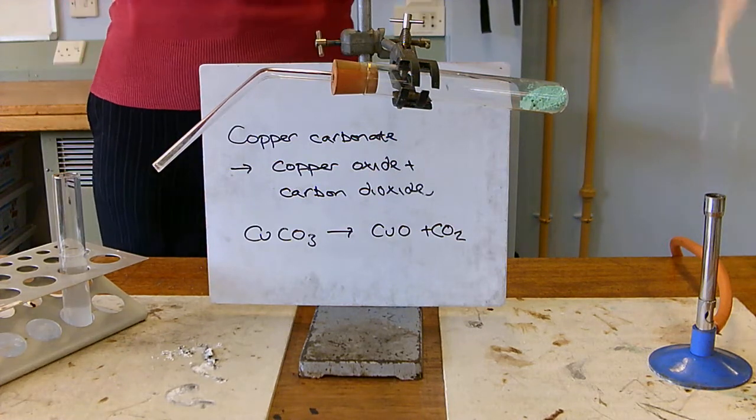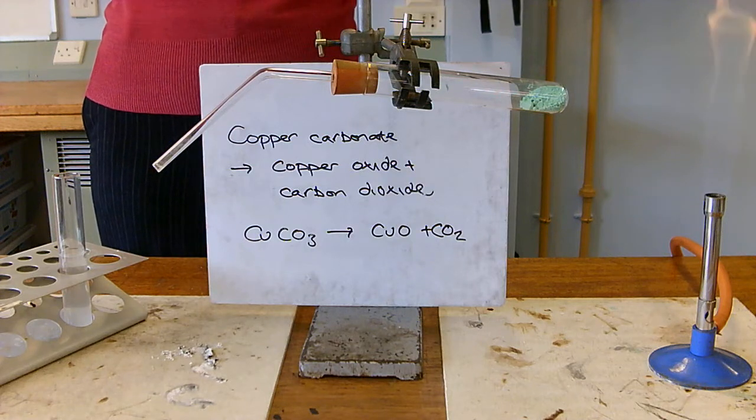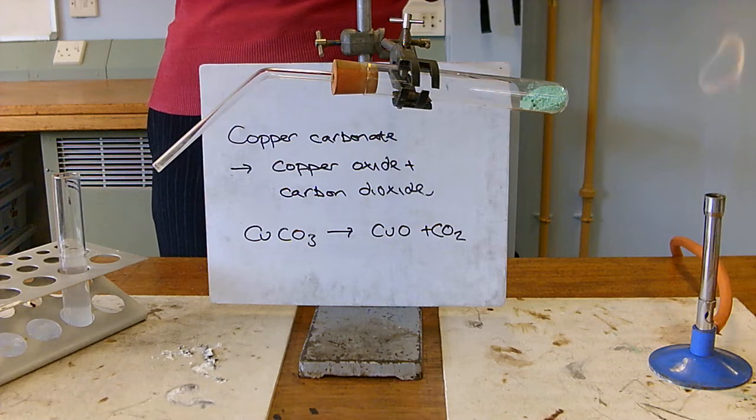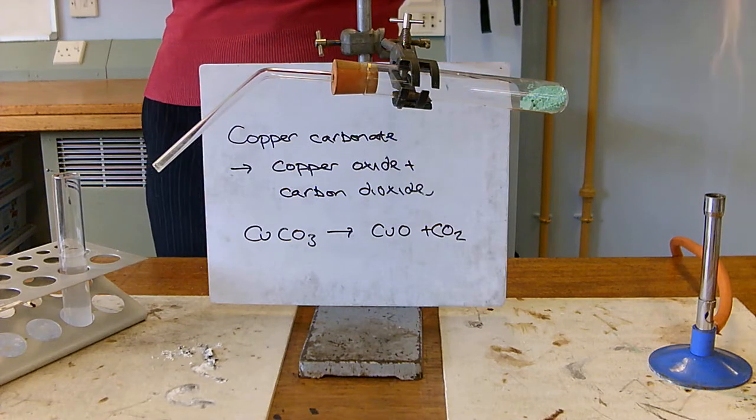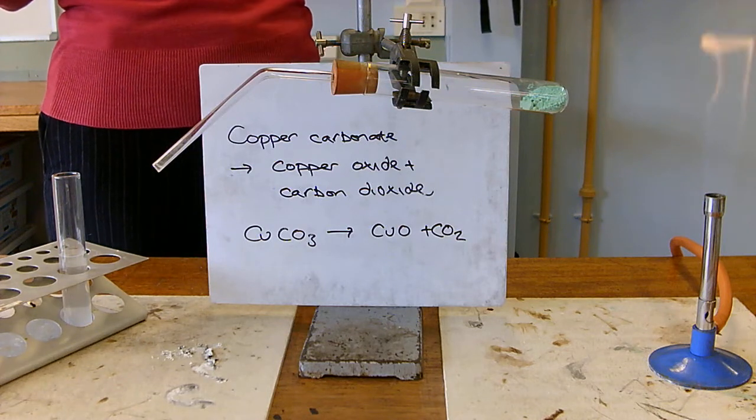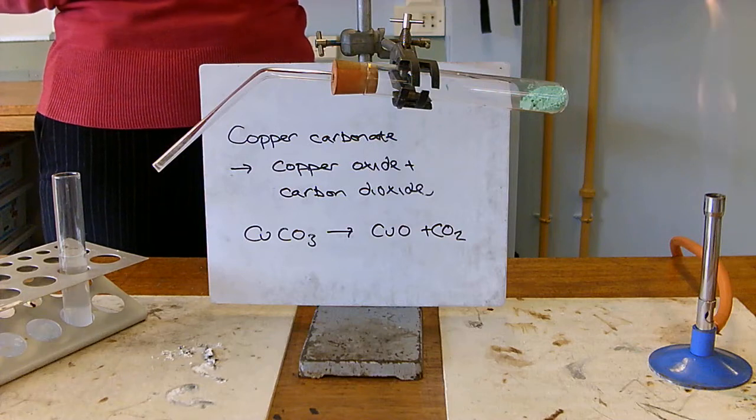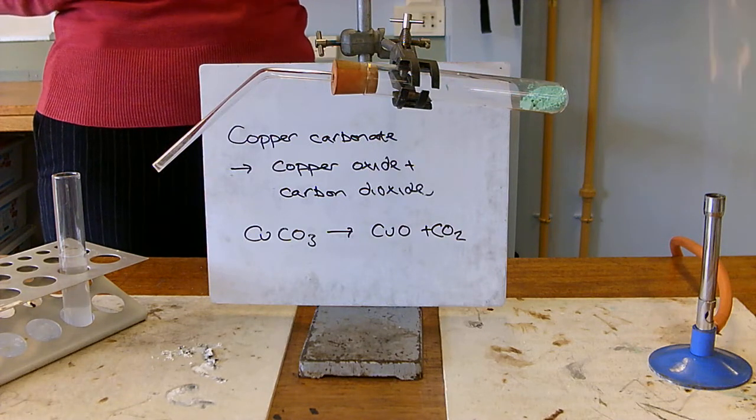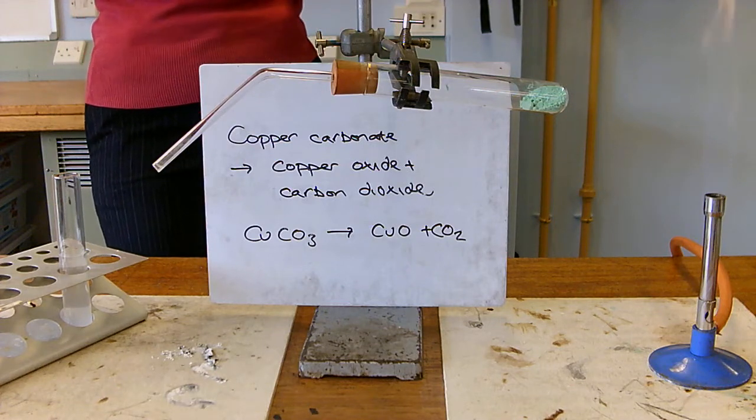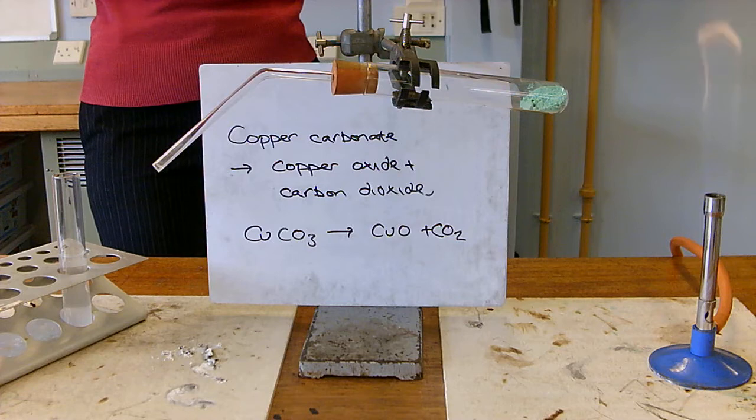You can tell that from its name, it's got carbon in it and the ATE ending tells us it's got oxygen in it. So, copper carbonate is made of these five atoms. When we heat it up, we can break bonds between some of those atoms in the molecule and split it up. A bit like taking apart three Lego bricks from the five they were a part of. The heat breaks that bond and splits them up.